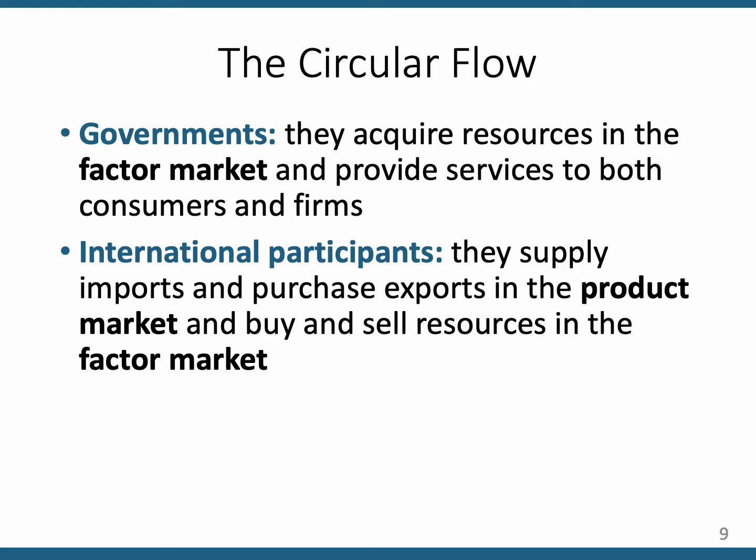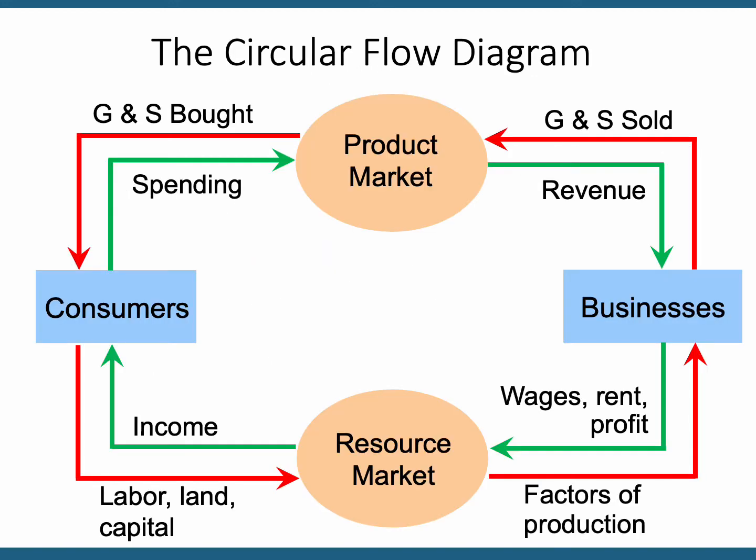I'm going to show you two diagrams. The first one is my diagram, not from the textbook, and then we'll add a couple pieces to show you the diagram that's in your text. So there are two markets in this model of the US economy: product markets on the top. The green arrows are money flowing circularly — going clockwise in this model. The red arrows represent goods, services, and resources flowing in the opposite direction. In product markets, businesses are the sellers and consumers, individuals, households are the buyers.